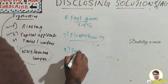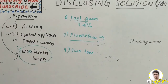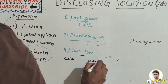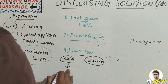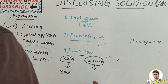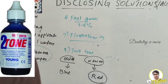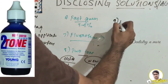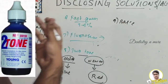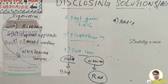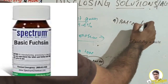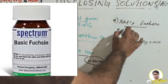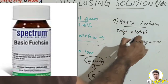Two-tone dye is the most popular disclosing agent. It differentiates older plaque, which appears blue, from newer plaque, which appears red. Basic fuchsin is an ethyl alcohol preparation with a few drops of distilled water.